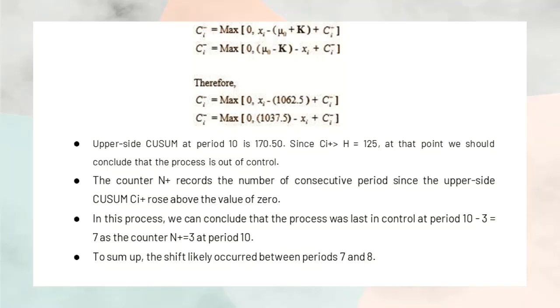Furthermore, the counter n positive records the number of consecutive periods since the upper side CUSUM C i plus rose above the value of zero. In this process, we can conclude that the process was last in control at period 7 as the counter n positive equals 3.